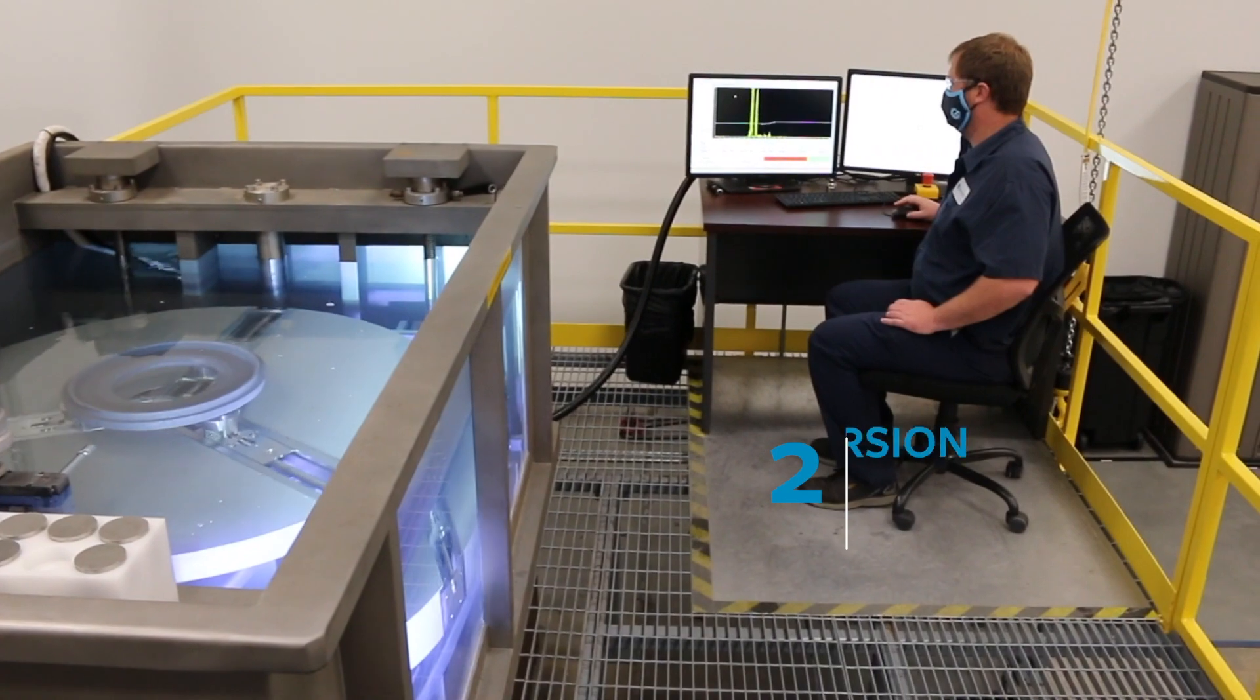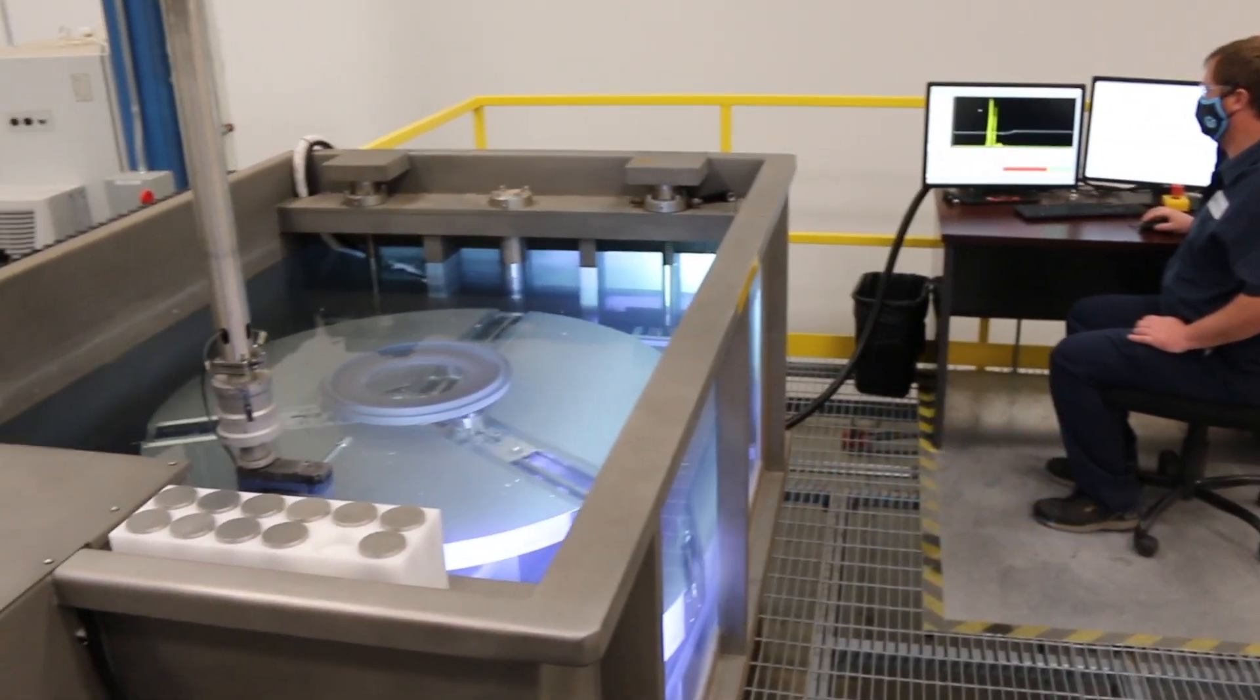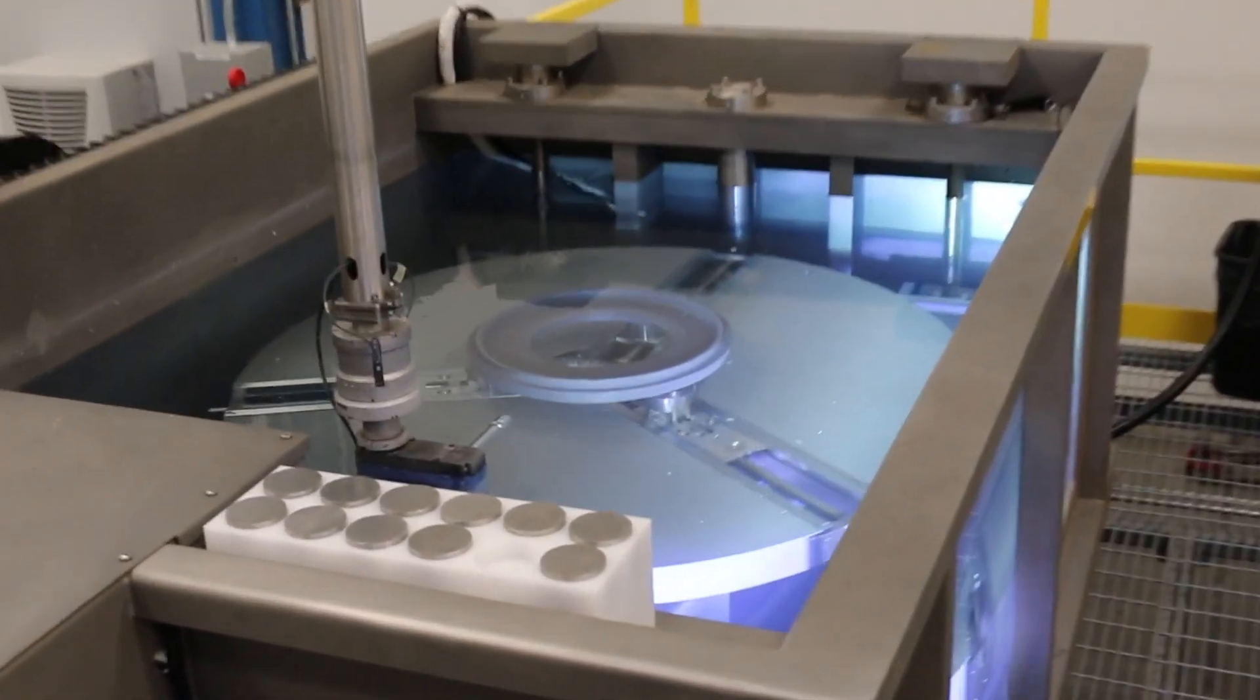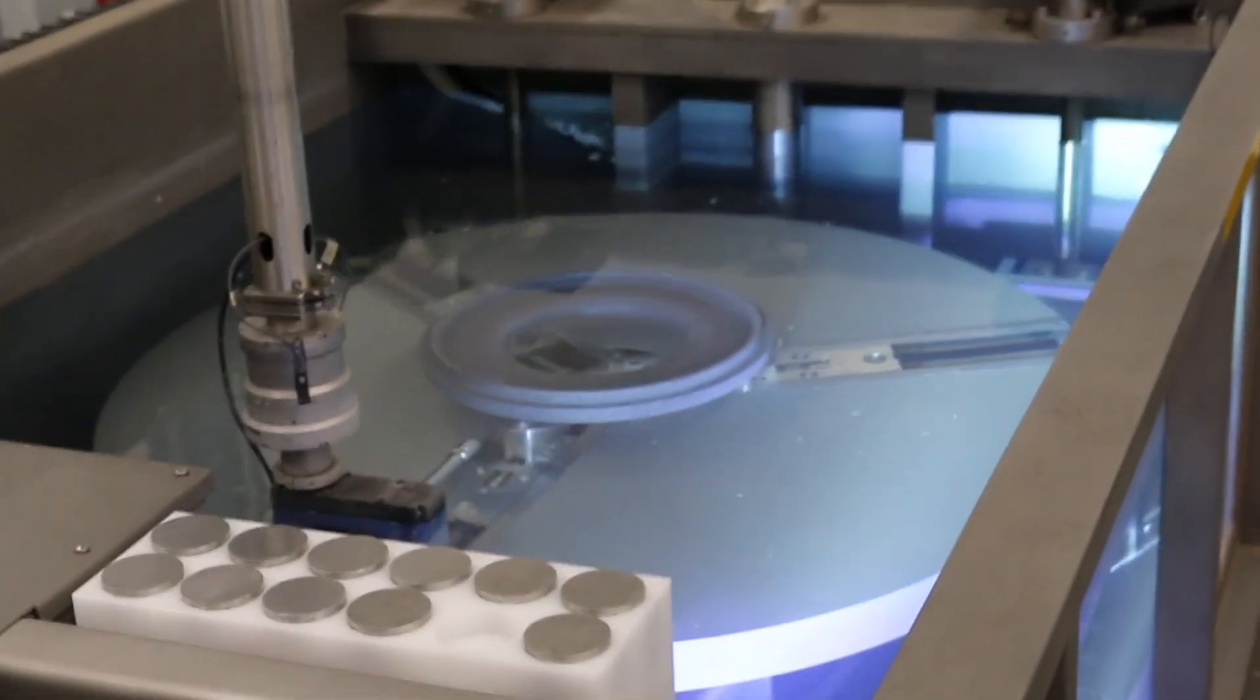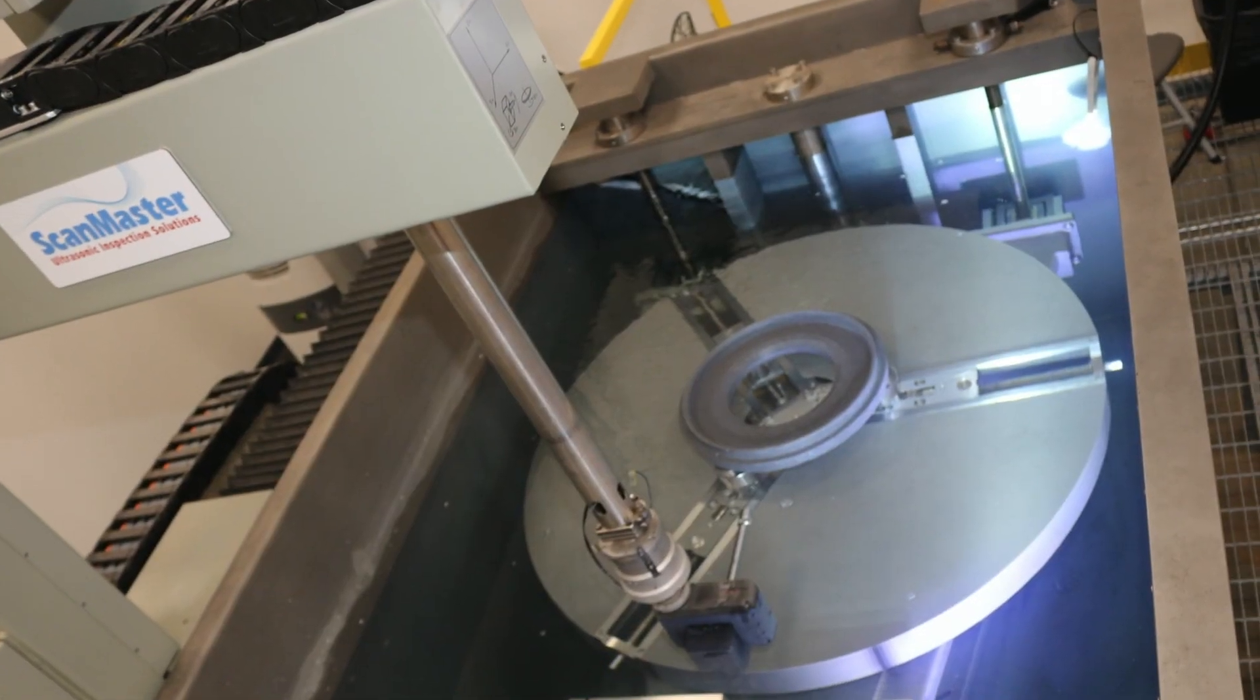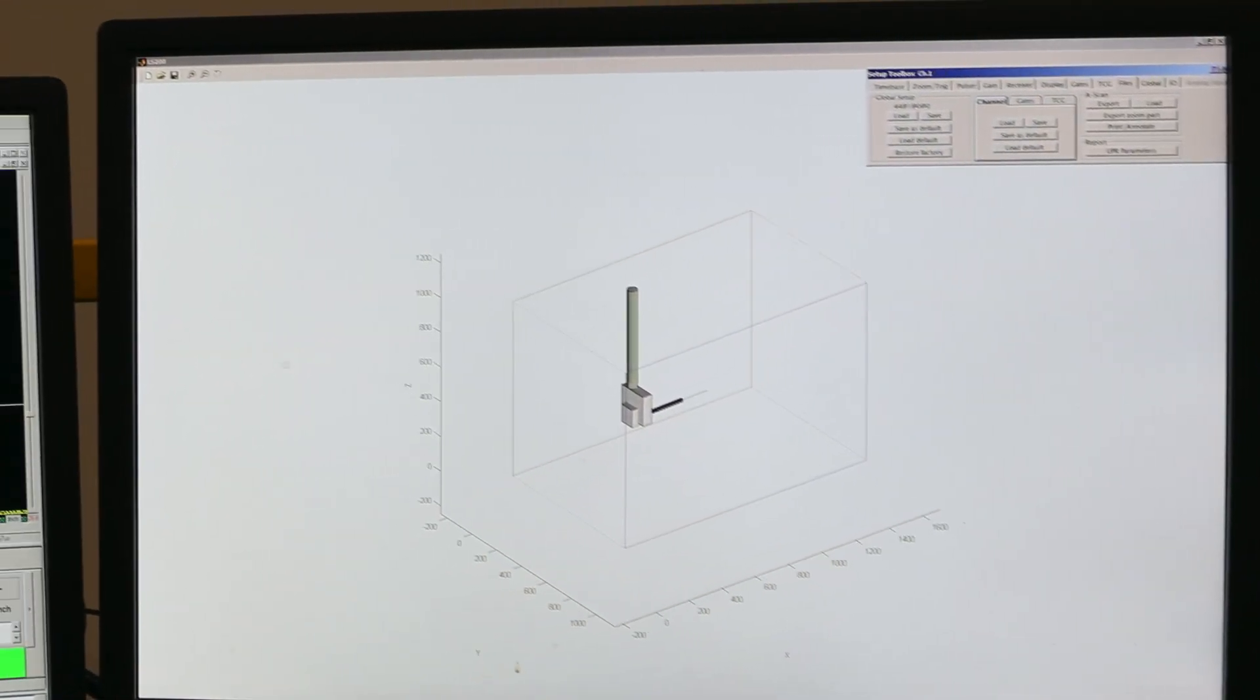Our second inspection technology is Immersion Ultrasonic Inspection. Ultrasonic Inspection utilizes high frequency sound to inspect material for subsurface discontinuities. Here at Element Greenville, we utilize the IRT ultrasonic immersion inspection systems which allow for highly controlled and automated inspections.